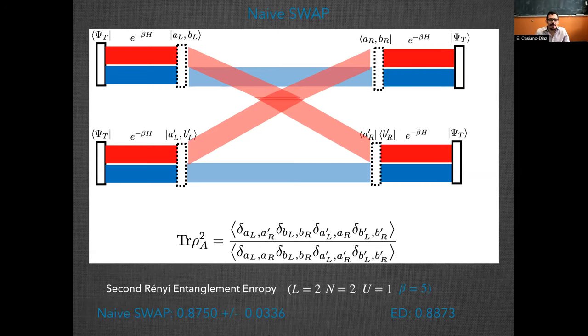At the moment we have a very naive implementation of this swap expectation value. So here, trace rho_A squared, remember that will be the expectation value of the swap operator. So we have an expression for it. What we'll do is that we measure the Fock state at the end of the path of each of these systems on the top. Then we compare them as indicated by the transparent lines. And based on the Fock states that we have, that'll determine which of these Kronecker deltas will survive and which won't.